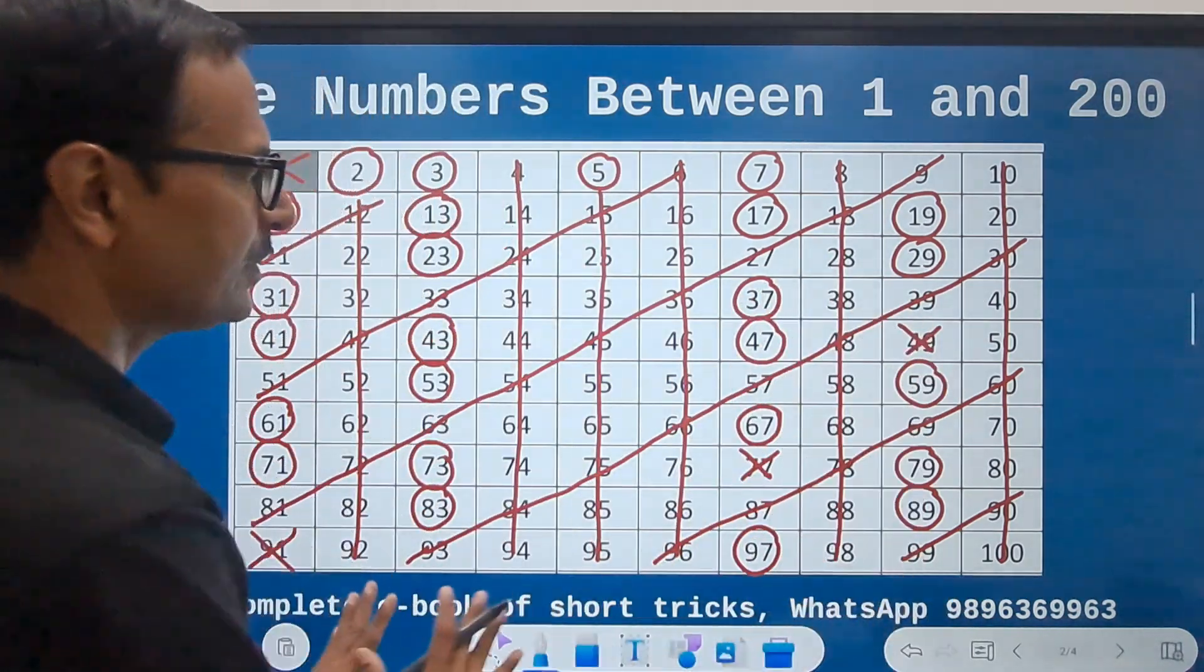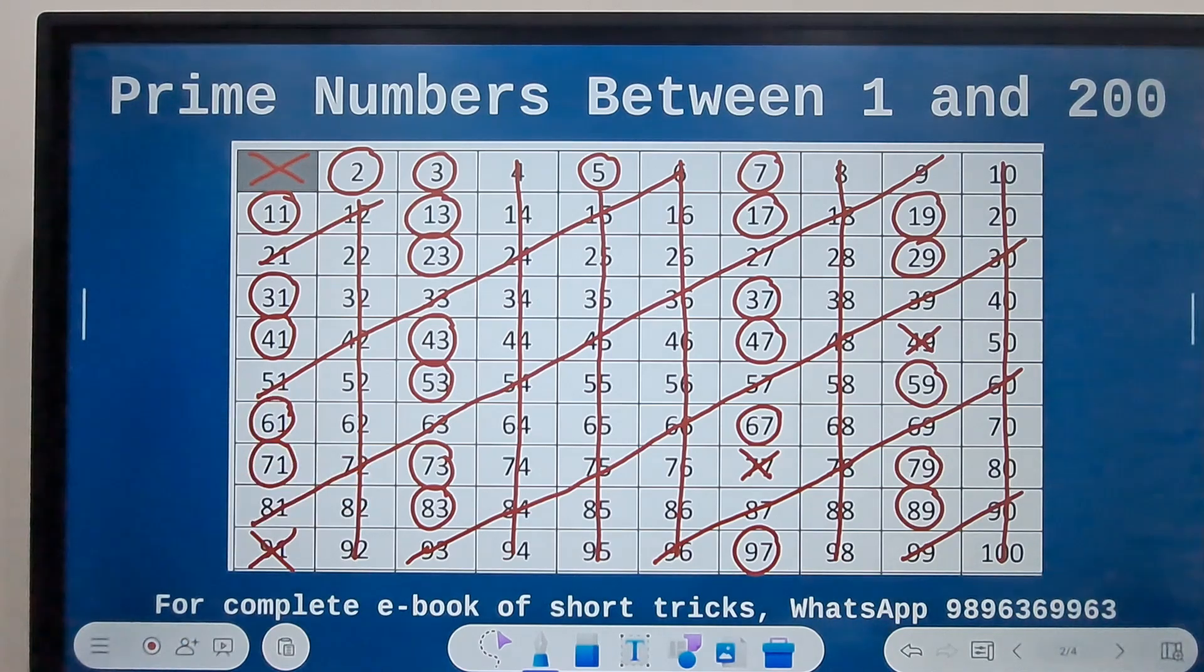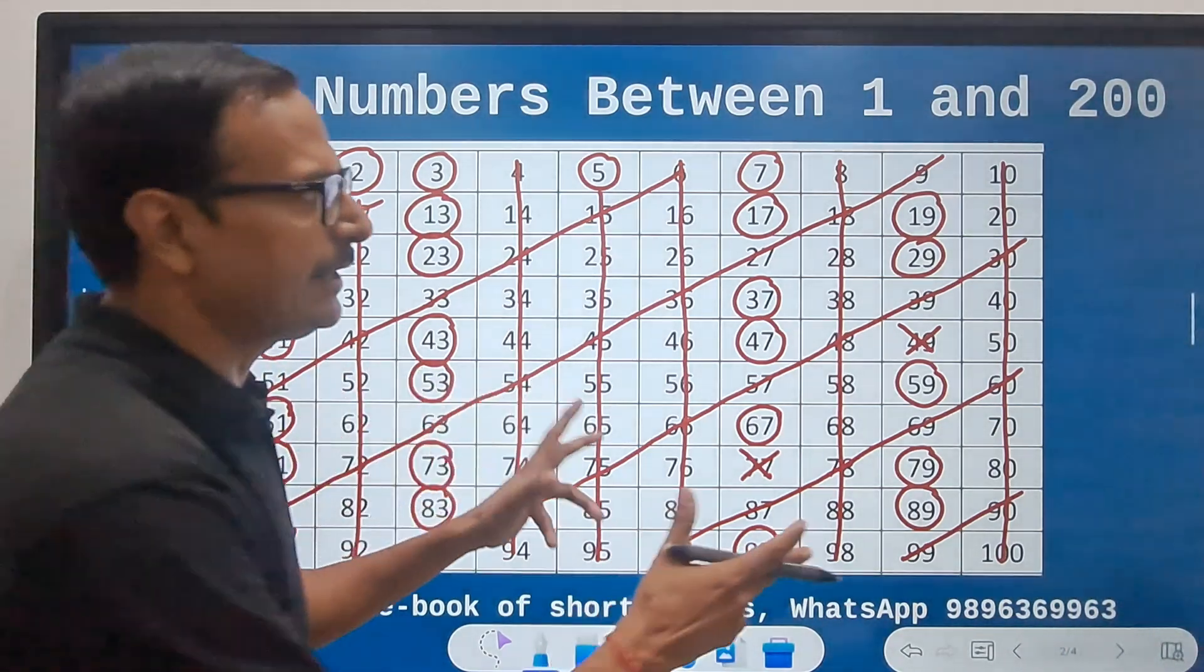So these are 25 prime numbers, and this concept is known as the sieve of Eratosthenes. Quite easy, right? This is like one of the easier things available on the internet.